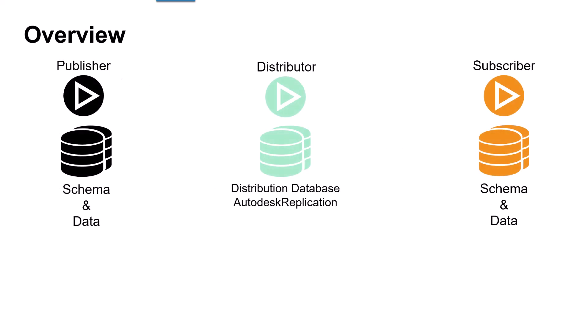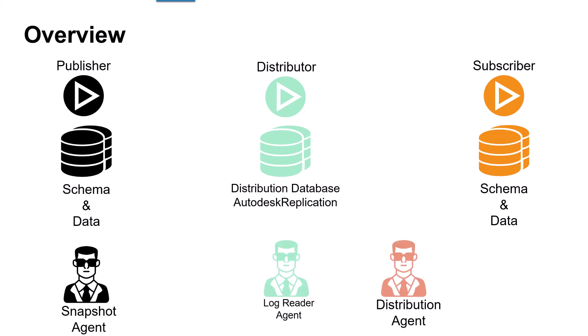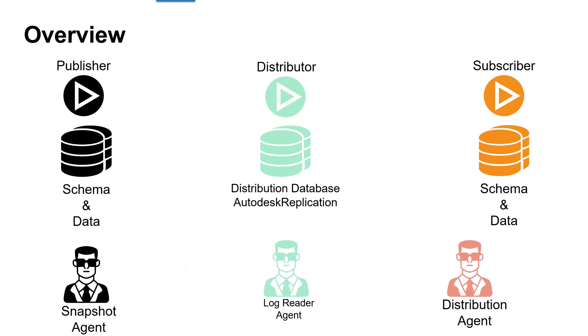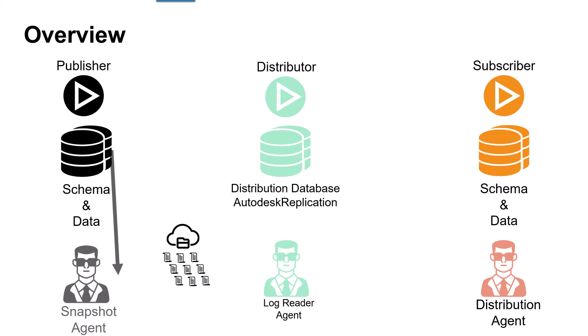This illustration shows the principal components of Microsoft SQL transactional replication: a publisher, a distributor, and one or more subscribers. Transactional replication is implemented by the SQL Server snapshot agent, log reader agent, and distribution agent. The distribution agent could run at the distributor for push subscriptions and at the subscriber for pull subscriptions. Autodesk Vault uses pull subscriptions, so the distribution agent runs at the subscriber.